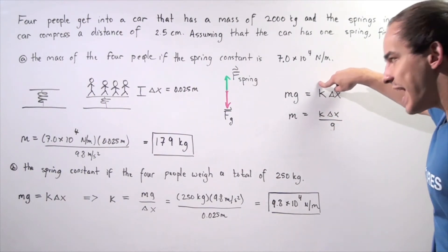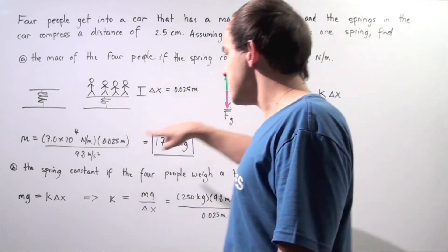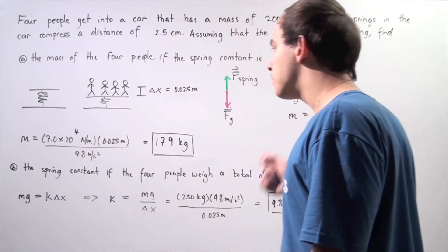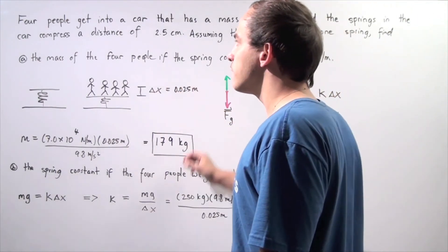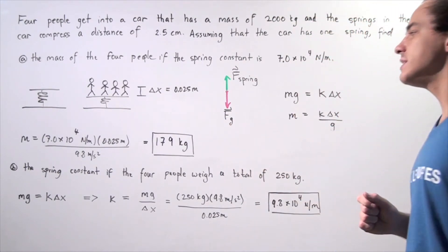We know what k is, we know what our change in x is, and we know what our g is. We multiply the top, divide by the bottom, and we get approximately a mass of 179 kilograms. That means the total mass of the four people that get into the car is 179 kilograms.